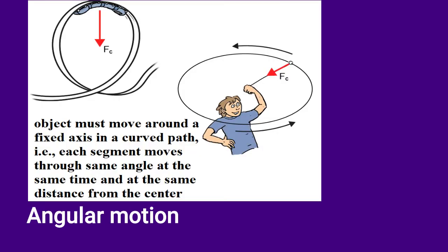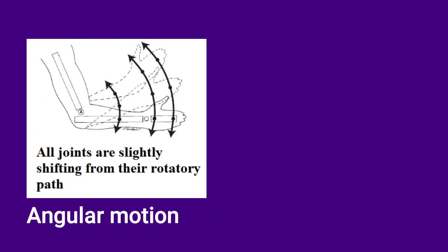Now let's discuss angular motion. When talking about true angular movement, remember that all the segments of an object must move around a fixed axis in a curved path, i.e., each segment moves through the same angle at the same time and at the same distance from the center. When you shake hands with someone, it might appear that the forearm-hand segment is moving through true angular movement, but actually all joints are slightly shifting from their true rotatory path.